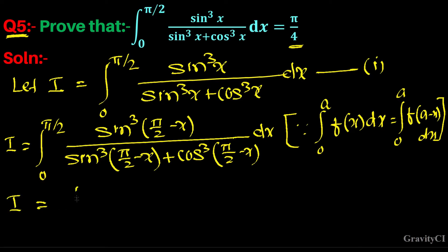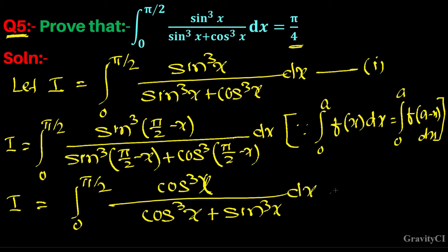So I equals integral 0 to π/2 of cos³x upon cos³x plus sin³x dx. This equation is second.